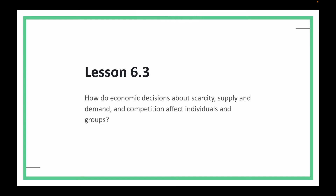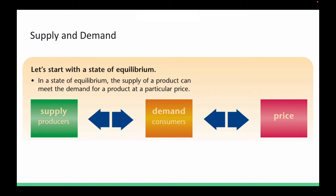We talked about scarcity in the last lesson, and today let's head over to supply and demand. In green we've got the supply given to us by the producers. Consumers, in this orangey color, are demanding a product, and in the pink we've got price. We're going to start with a state of equilibrium — where the supply of a product can meet the demand for a product at any particular price.